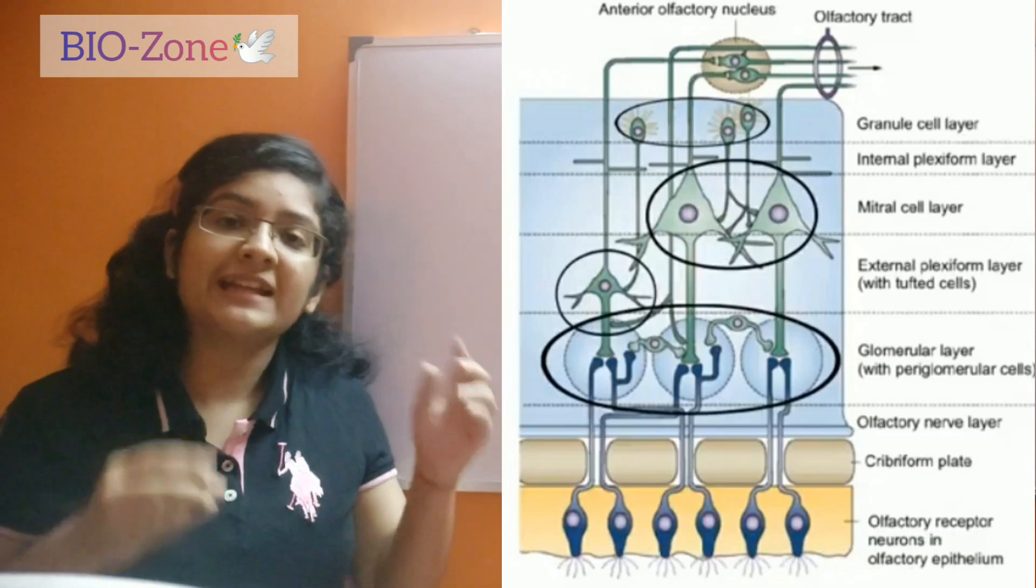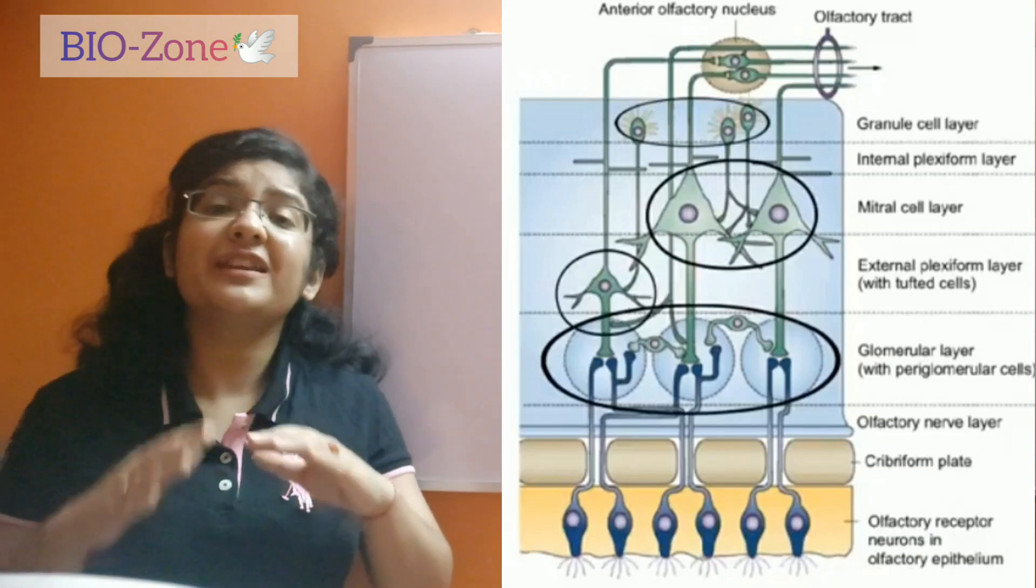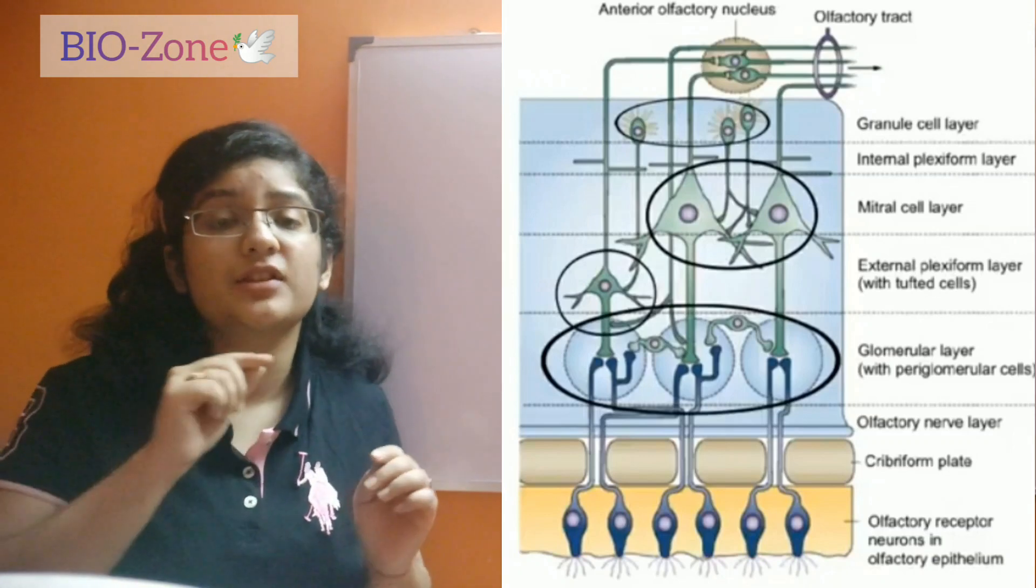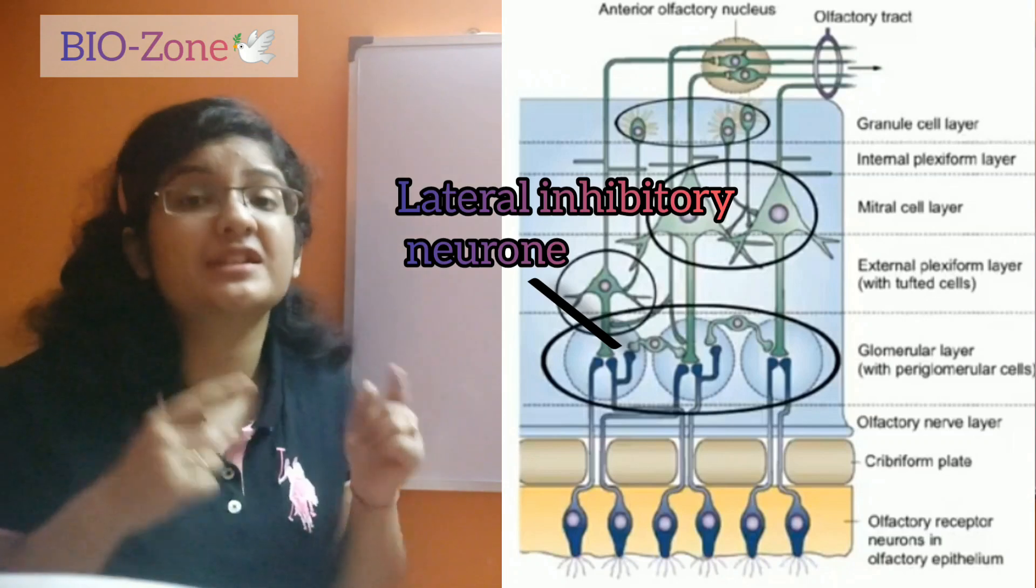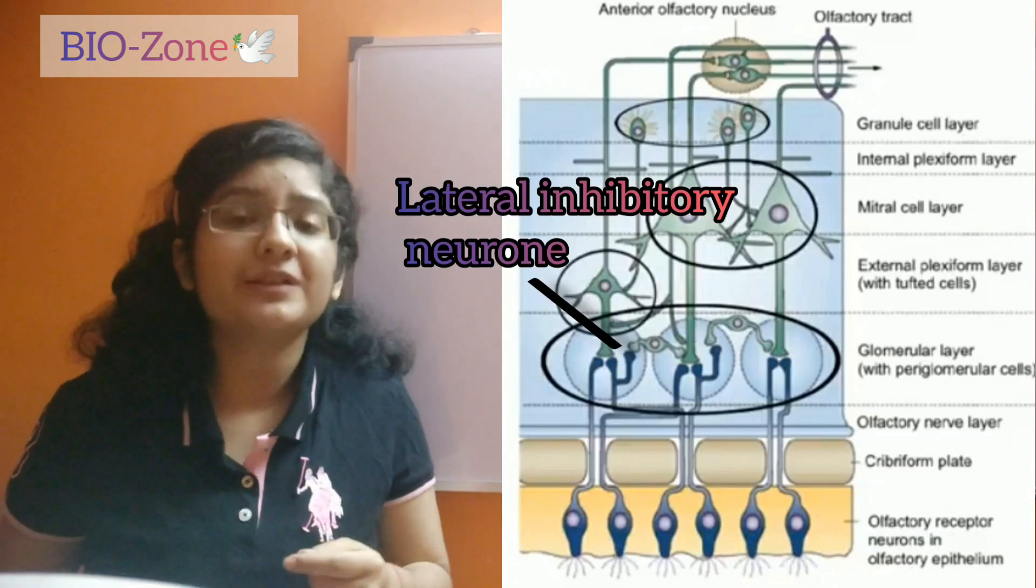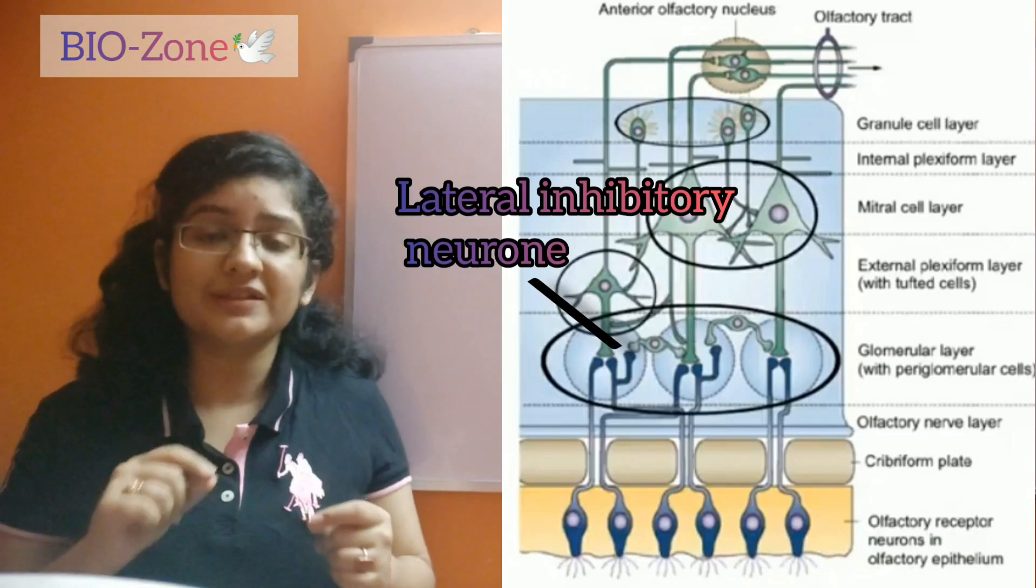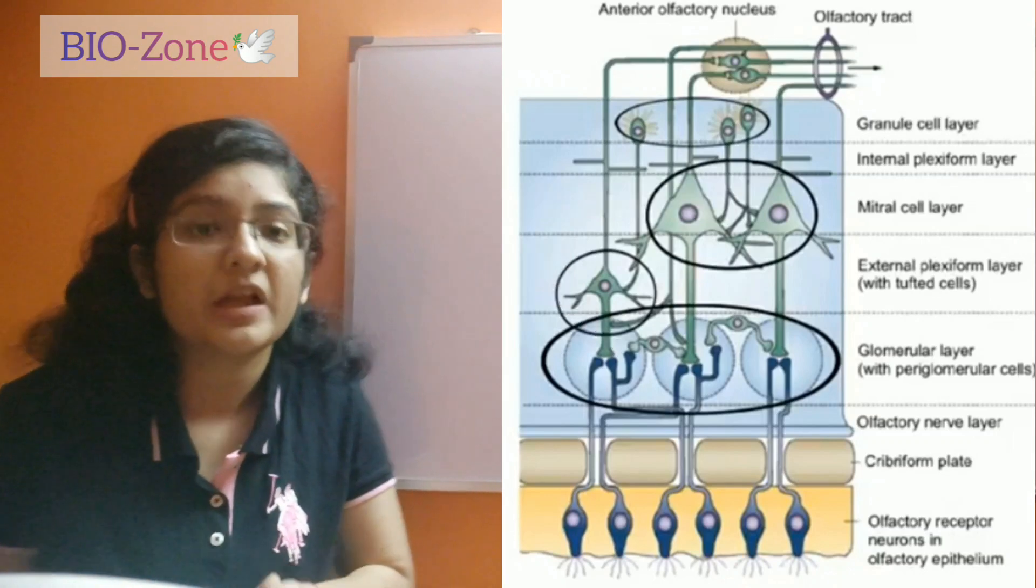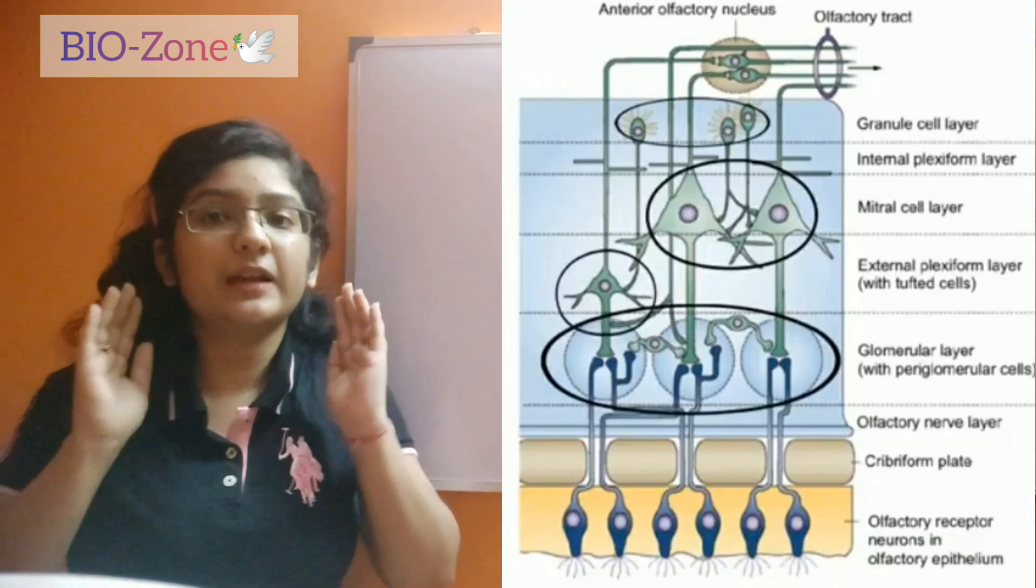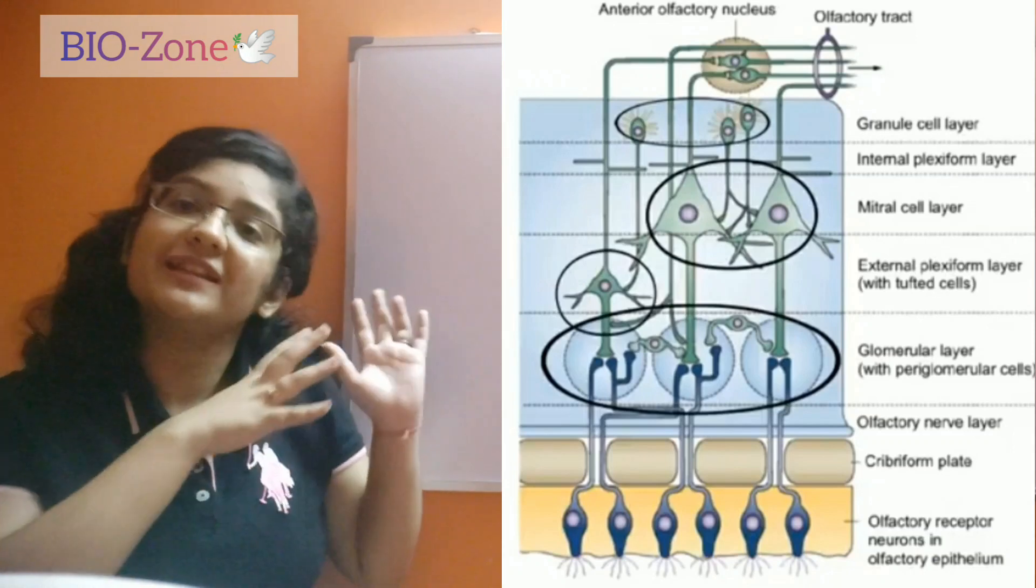And apart from that, in the olfactory bulb we have another set of neurons that is called the lateral inhibitory neurons, which is also seen in the picture, which is called periglomerular neurons or granule neurons, which also help in the refinement process. So more or less you understand now what happens within this junction.